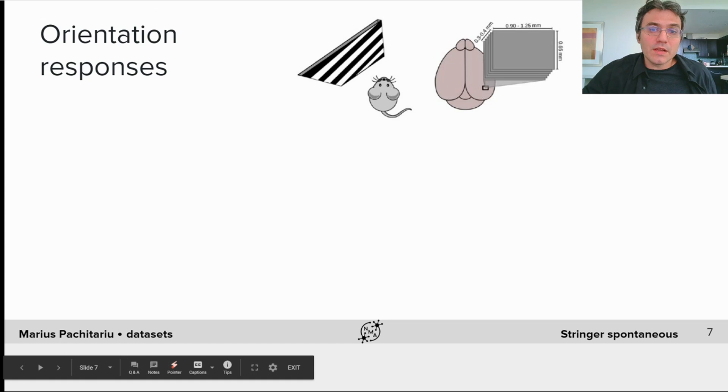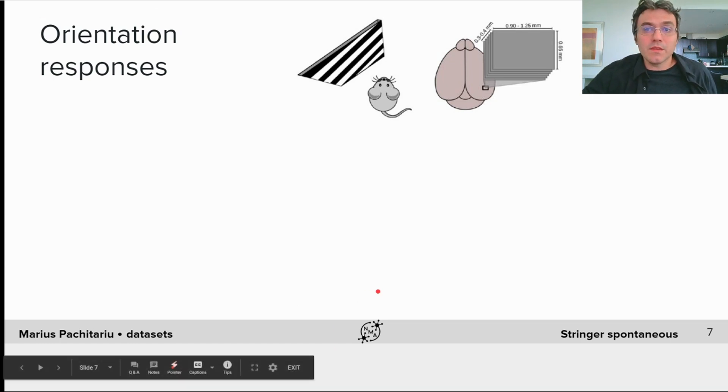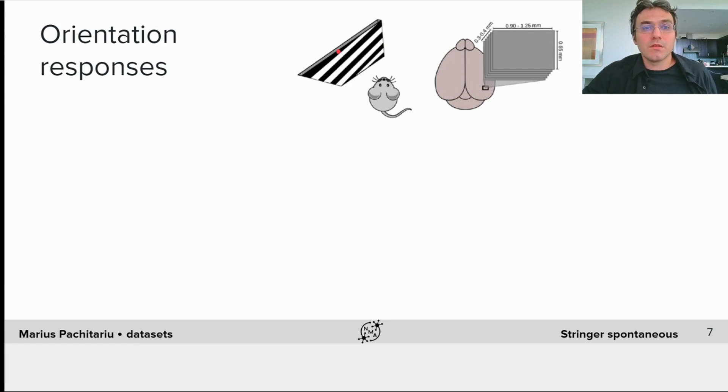We're also including a separate dataset of neural responses to visual stimuli, in this case, oriented gratings, defined by a single stimulus parameter, the orientation of the grating.